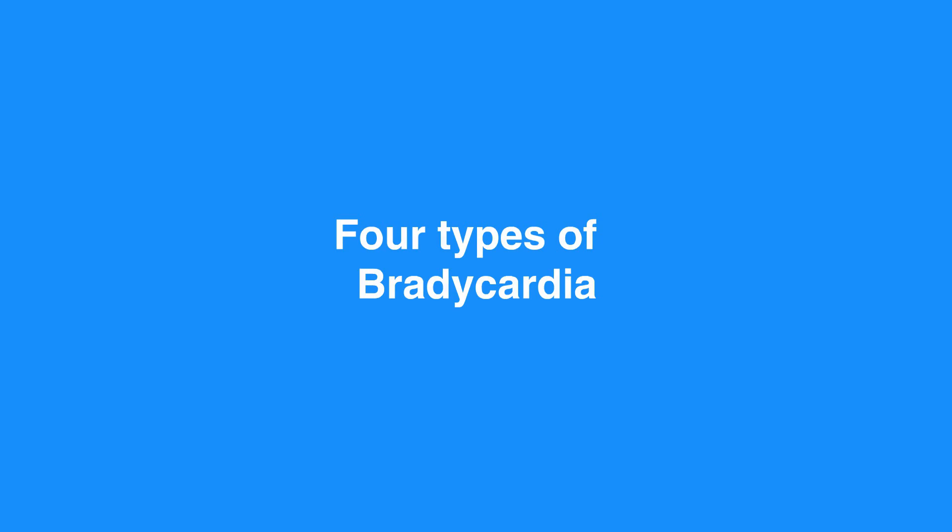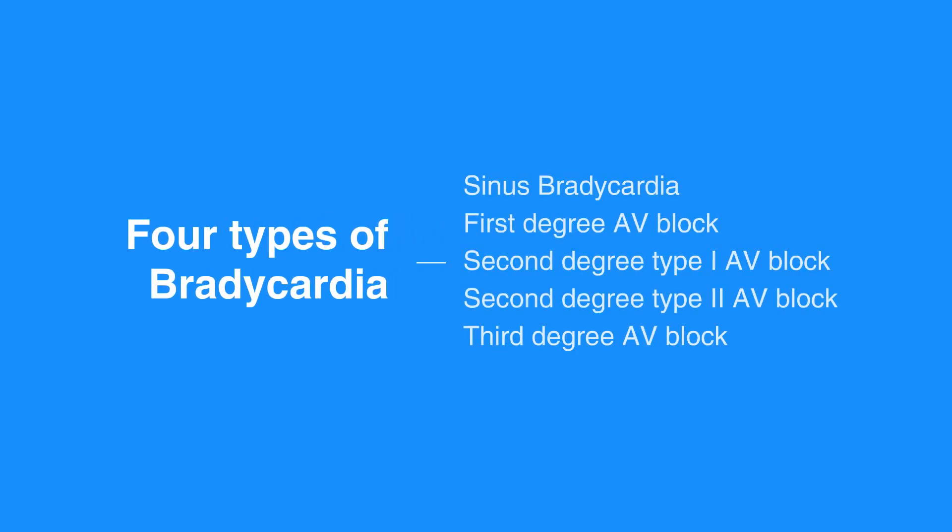We'll review four types of bradycardia in this lesson, including sinus bradycardia, first degree AV block, second degree type 1 AV block (also known as Wenckebach), second degree type 2 AV block (also known as Mobitz II), and third degree AV block (also known as complete heart block).